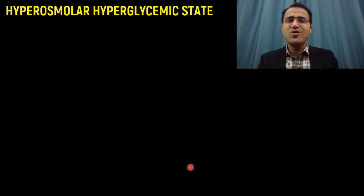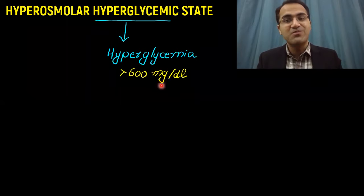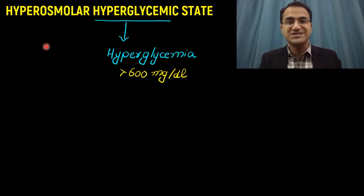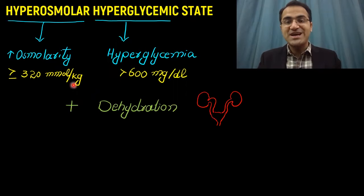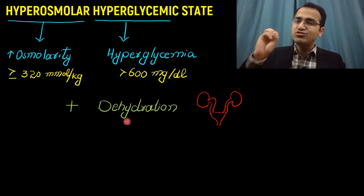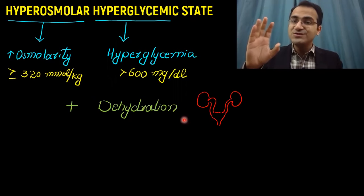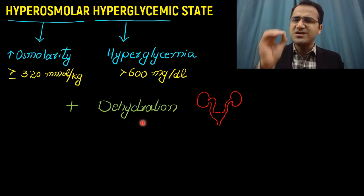What is hyperosmolar hyperglycemic state? As its name implies, there is hyperglycemia — sugar levels above 600 mg per deciliter. Due to excess sugar accumulation in blood, the osmolarity of blood also increases, so blood is hyperosmolar with osmolarity greater than or equal to 320 mmol per kg. With hyperglycemia and hyperosmolarity, there is dehydration in HHS, because the body tries to excrete excess glucose in urine, resulting in loss of water and severe dehydration.